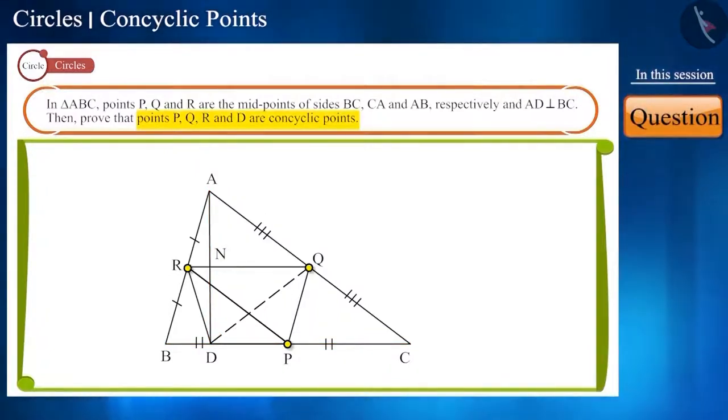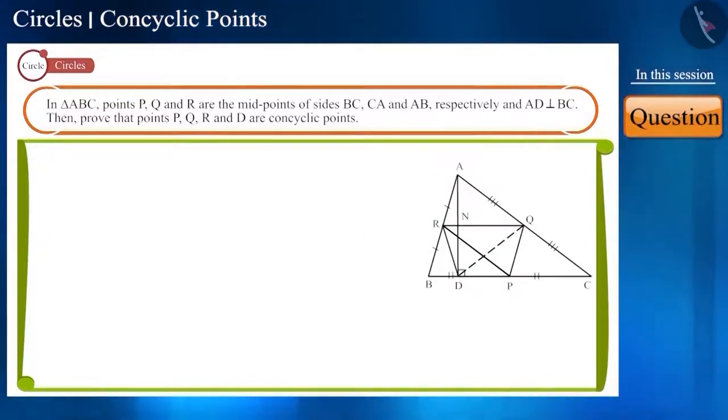Then, prove that points P, Q, R and D are concyclic points. We need to prove that these four points lie on a circle.